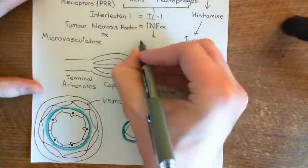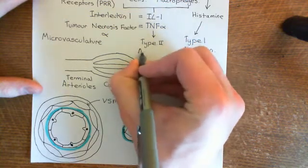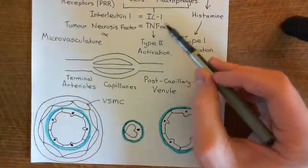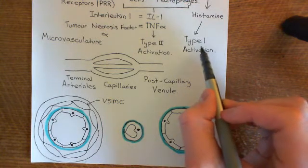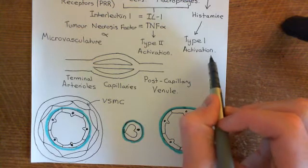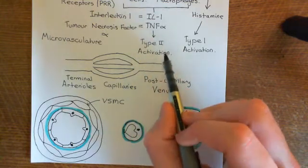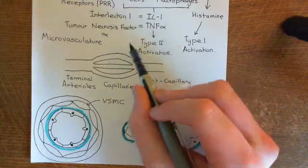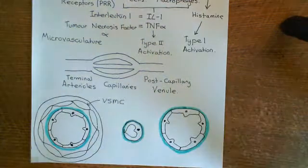Interleukin-1 and tumor necrosis factor alpha cause what's known as type 2 activation of the endothelial cells, which doesn't occur in minutes — it's much slower and takes hours to occur. The reason type 1 is faster than type 2 is that type 1 activation doesn't involve any new protein synthesis. Every single protein needed for type 1 activation is already made and within the endothelial cells, whereas type 2 activation requires the synthesis of a whole new bunch of proteins, which is slow and takes hours. So we'll start off with type 1 activation, which is going to occur first.